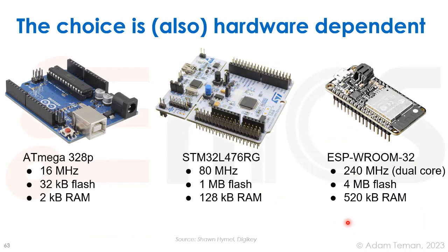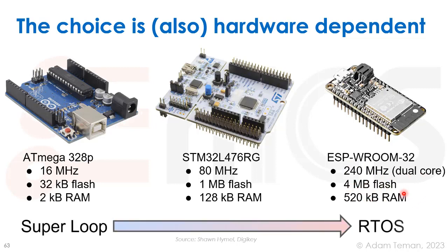The choice is also hardware dependent. If we have something like an Arduino — a slower processor with little flash and RAM — a super loop suffices. Going all the way to a bigger, faster dual-core processor with much more flash and RAM, we have a spectrum where more powerful hardware warrants running an RTOS to make things easier.